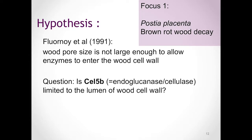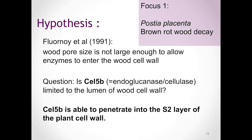We can follow it through the process of decay and see if it is in fact limited to the lumen of the plant cell wall, or if it can in fact enter into the individual layers of the secondary plant cell wall. My hypothesis states: Cel 5B is able to penetrate into the S2 layer of the plant cell wall.